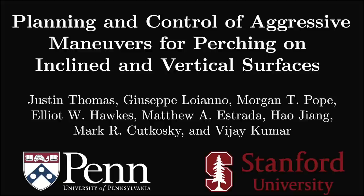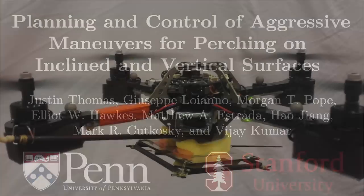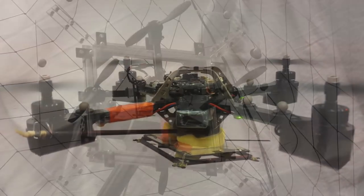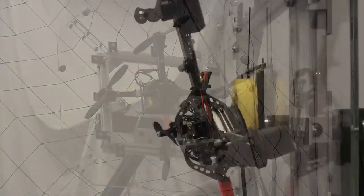In this work, the Grasp Lab at the University of Pennsylvania presents a collaborative project with Stanford University to give our quadrotors the ability to perch on smooth vertical surfaces such as windows.